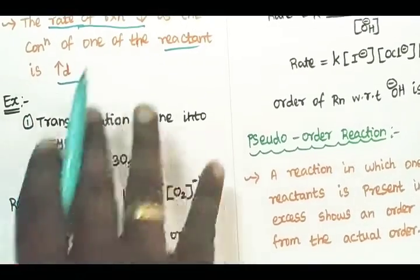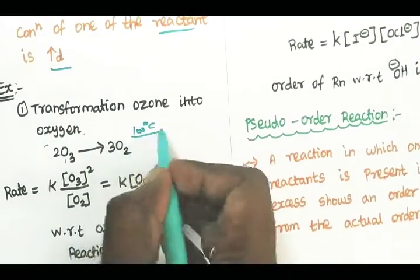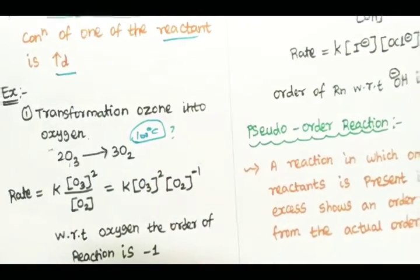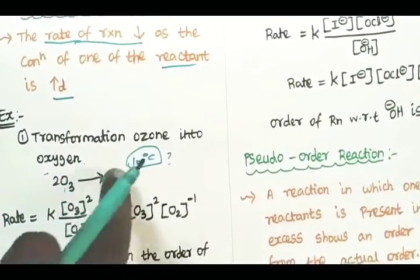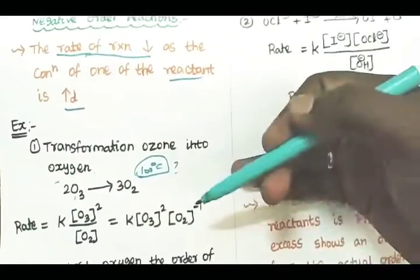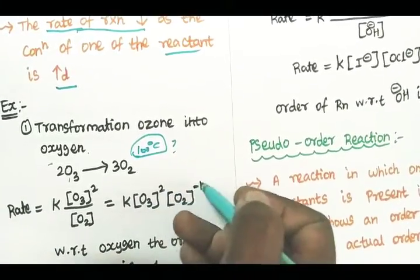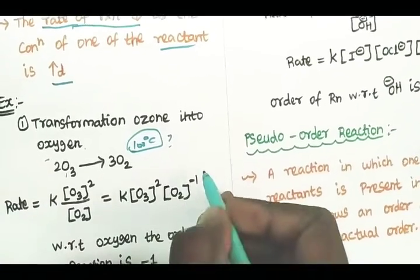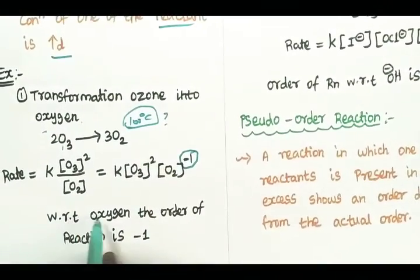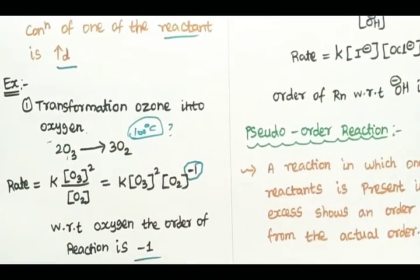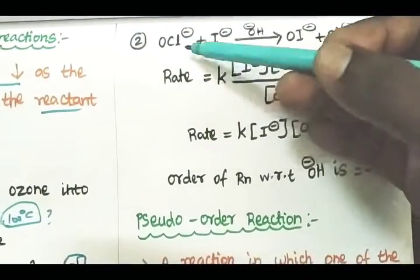If you look at the reaction of ozone into oxygen, this reaction belongs to the negative order reaction — the rate of reaction is a negative order reaction. As the concentration of ozone increases, the rate decreases, confirming negative order behavior.